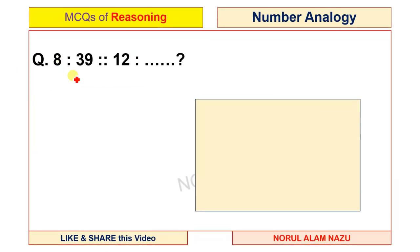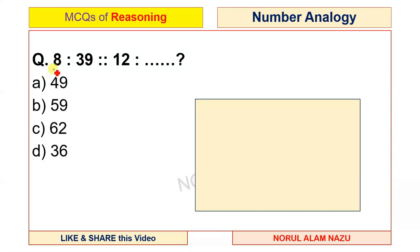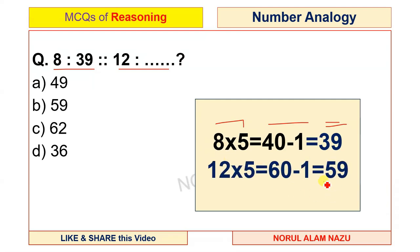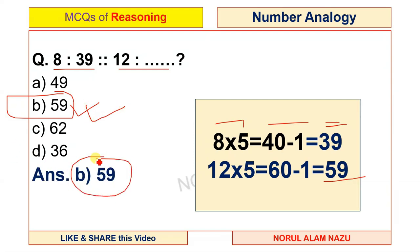Next question: 8 is to 39, in the same way 12 is to what? Options: 49, 59, 60, 36. 8 into 5 is 40, minus 1 equals 39. So 12 into 5 equals 60, and 60 minus 1 equals 59. This is option B — 59 is the correct answer.